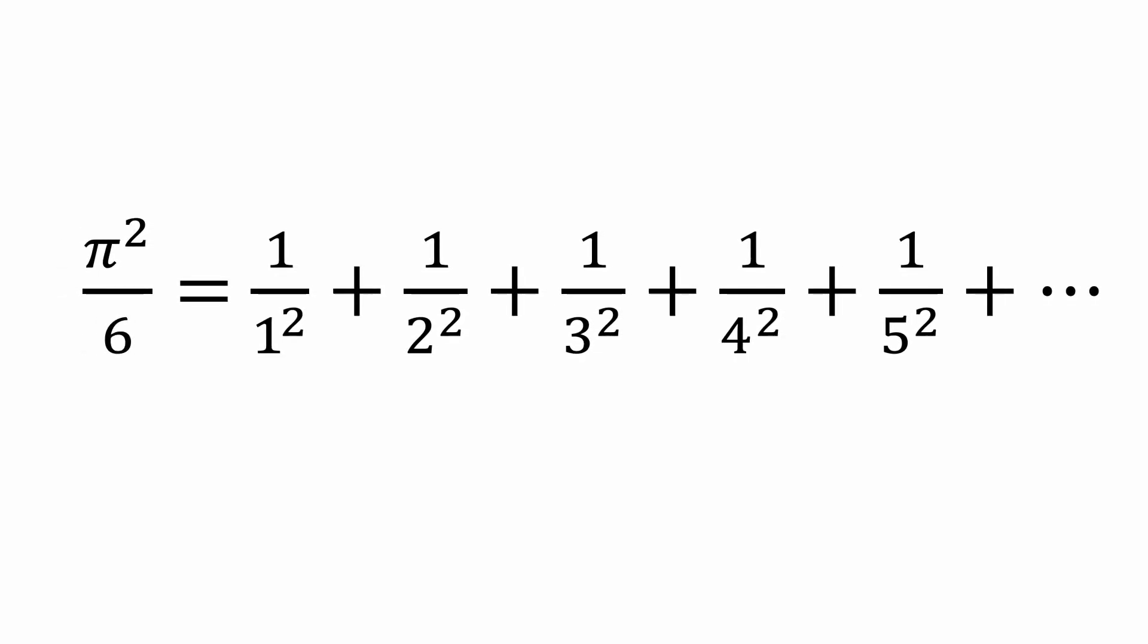And look what we're left with. One of the most famous series in all of mathematics. Can you believe that we showed that the sum of the reciprocals of the squares of all the natural numbers from 1 to infinity is just π² over 6? It's like the Mona Lisa of mathematics. This, of course, is the solution to the famous Basel problem first proved by the great Leonard Euler in 1734.